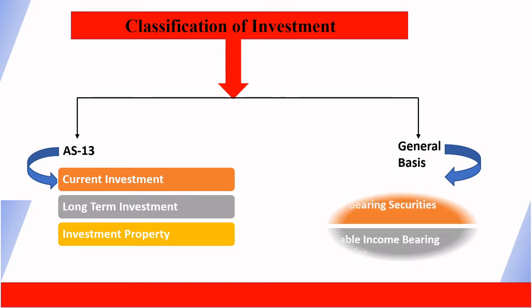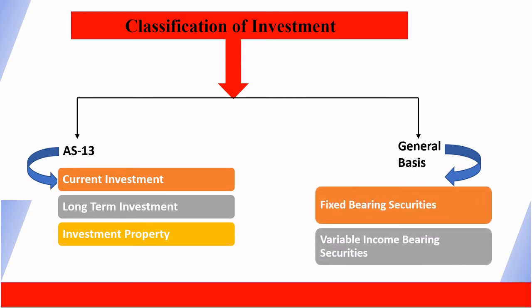On a general basis, we have two types of investment: number one is fixed income bearing securities, and number two is variable income bearing securities. Now, on the AS13 basis, let's discuss current investments — what does current investment mean?